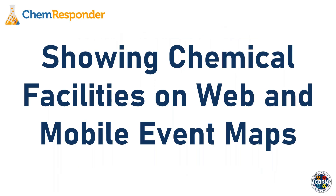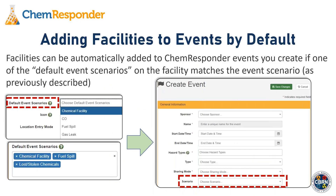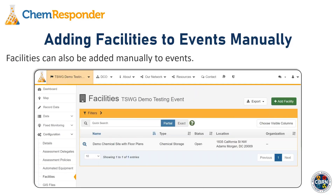We'll now talk about showing chemical facilities on web and mobile event maps. You can display these as facility icons in your event. Facilities can be automatically added to ChemResponder events if one of the default event scenarios on the facility matches the event scenario you provide on the Create Event form. For example, if you choose the Chemical Facility scenario when creating an event, that facility will be automatically included.